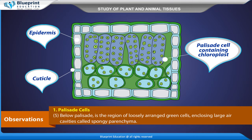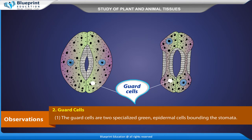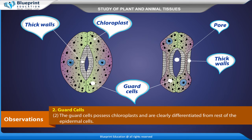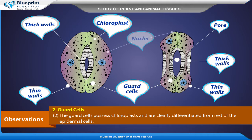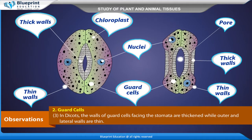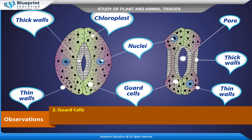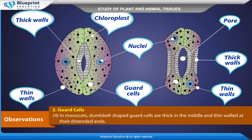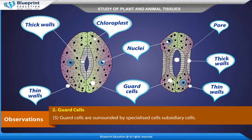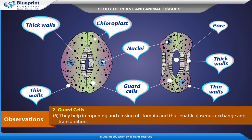Below the palisade is the region of loosely arranged green cells enclosing large air cavities, called spongy parenchyma. Guard cells are two specialized green epidermal cells bounding the stomata. The guard cells possess chloroplasts and are clearly differentiated from the rest of the epidermal cells. In dicots, the walls of guard cells facing the stomata are thickened while outer and lateral walls are thin. In monocots, dumbbell-shaped guard cells are thick in the middle and thin-walled at their distended ends. Guard cells are surrounded by specialized subsidiary cells that help in opening and closing of stomata, enabling gaseous exchange and transpiration.